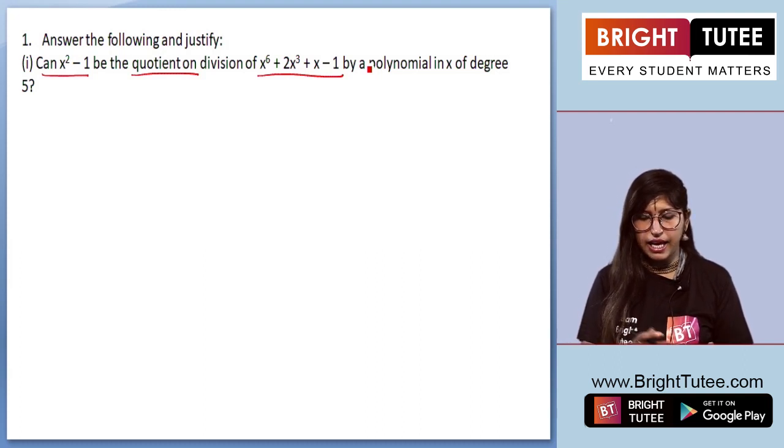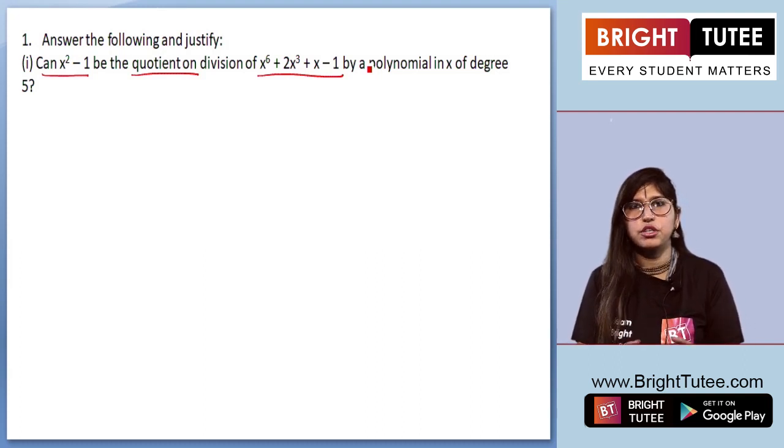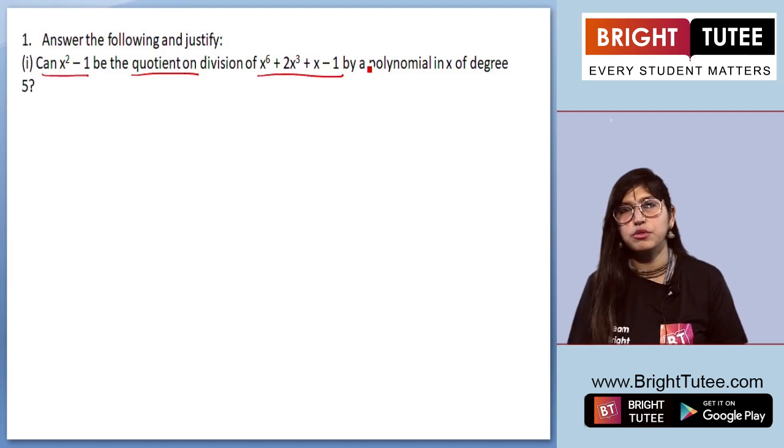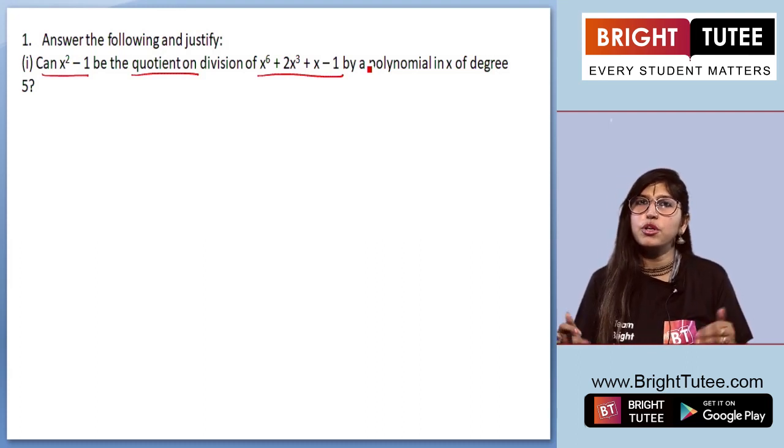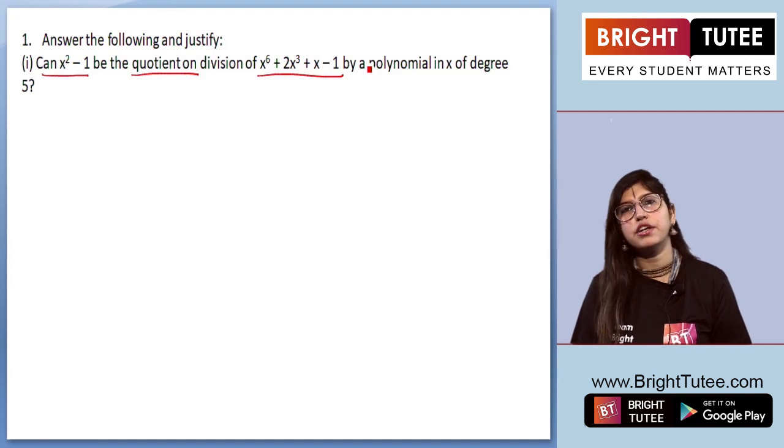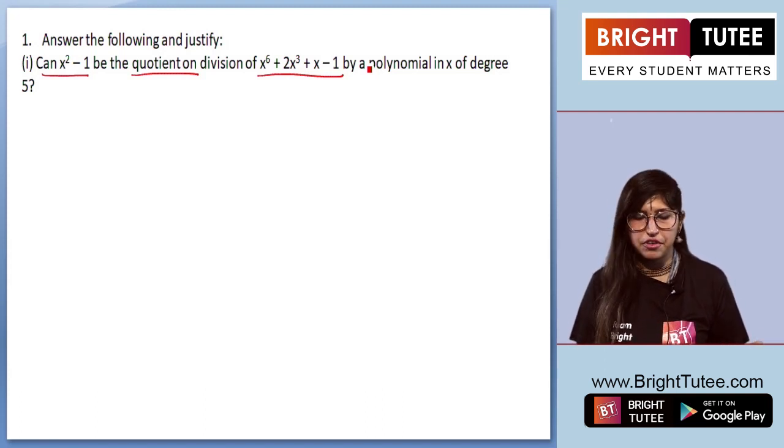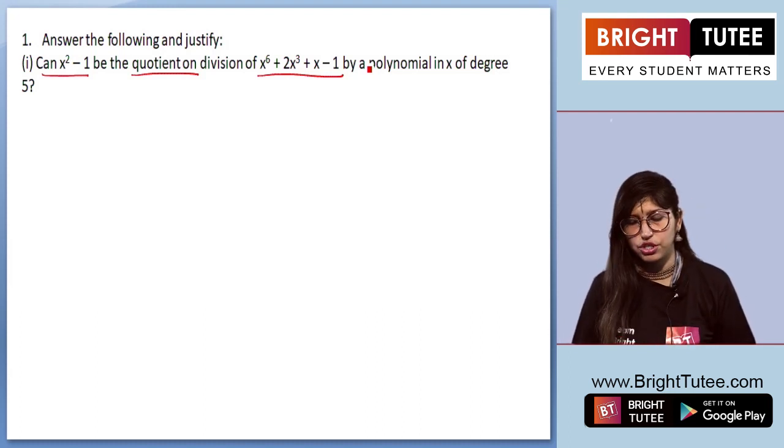The question simply asks: Can x square minus 1 be the quotient on division of this expression which is given, by a polynomial where the divisor is of degree 5? And we just need to confirm and show that x square minus 1 is a quotient or cannot be a quotient.